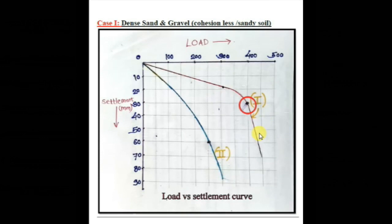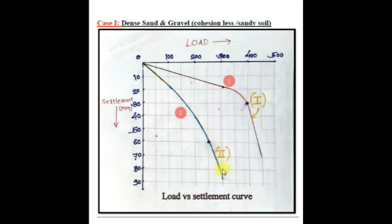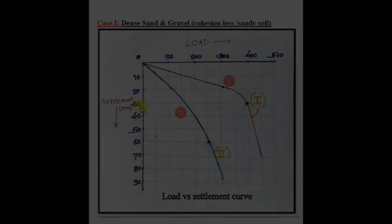This behavior is possible for stiff soil and overconsolidated clay (OCC) soil. We can see two curves here — the first for sandy soil and the second for clay soil. In sandy soil the failure point can be easily detected, but in clay soil the curve is very smooth and shows progressive settlement. Hence the failure point cannot be easily detected; to detect it we draw a log vs log plot for load and settlement.